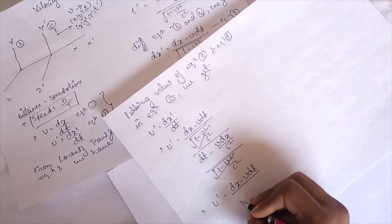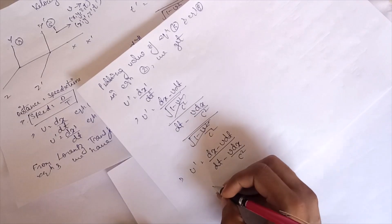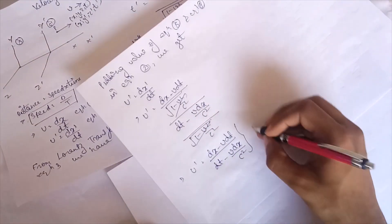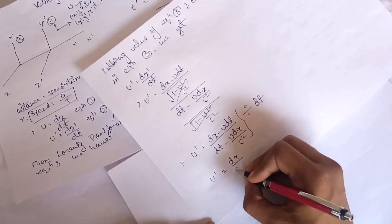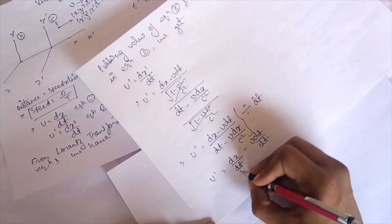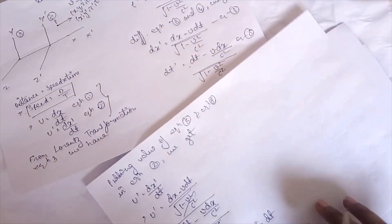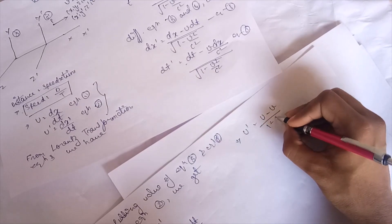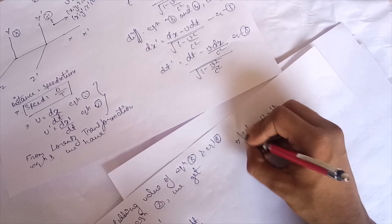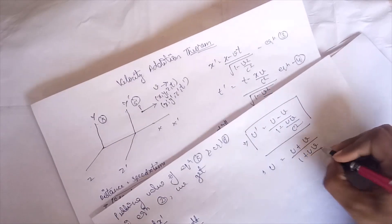Now dividing numerator and denominator by dt, we get u-dash = (dx/dt − v) / (1 − v·(dx/dt)/c²), which gives u-dash = (u − v) / (1 − uv/c²). This is the derivation of the velocity addition theorem. Similarly, the inverse relation is u = (u-dash + v) / (1 + u-dash·v/c²).